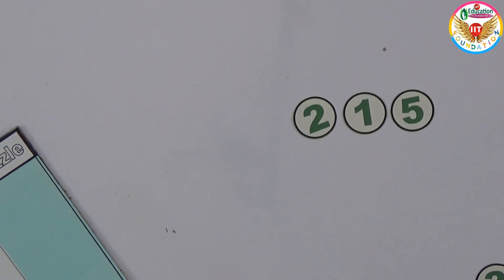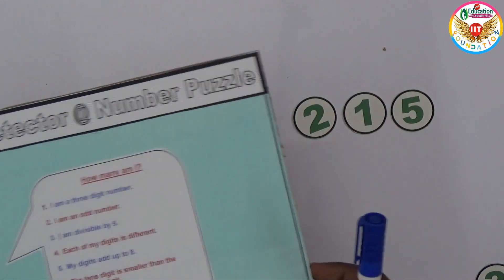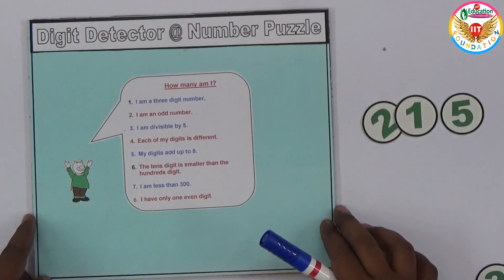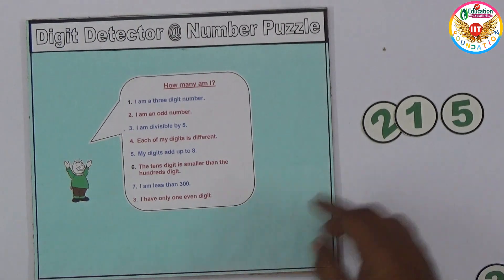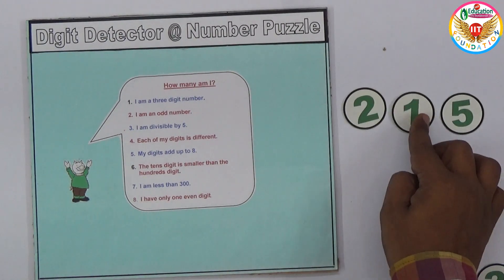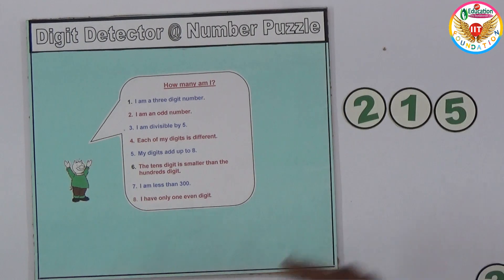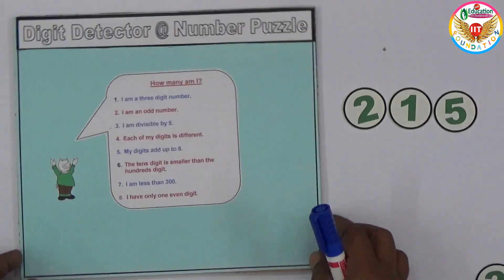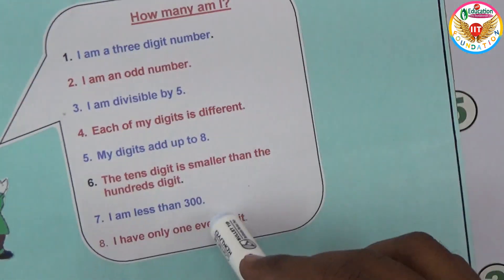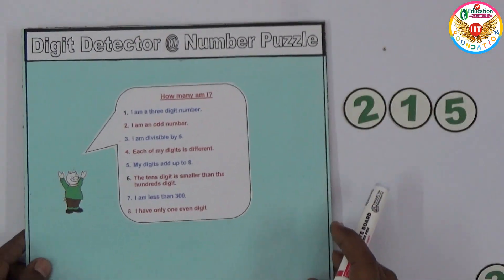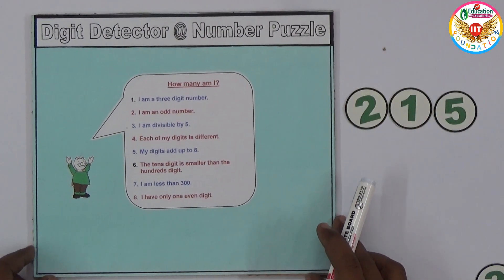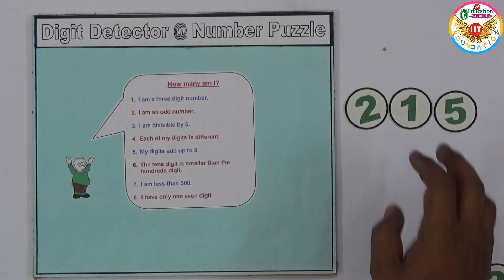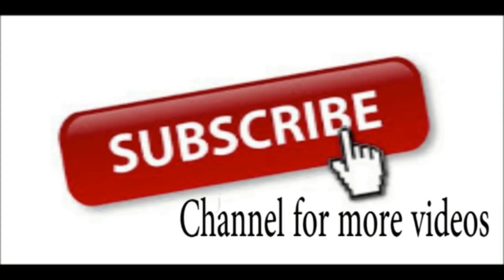Like this digit detector approach, we can make maths fun. You can frame different questions and give them to children so they can find out the answer while learning all the concepts behind maths one by one. This is a simple example of detecting the final answer — the answer is 215.